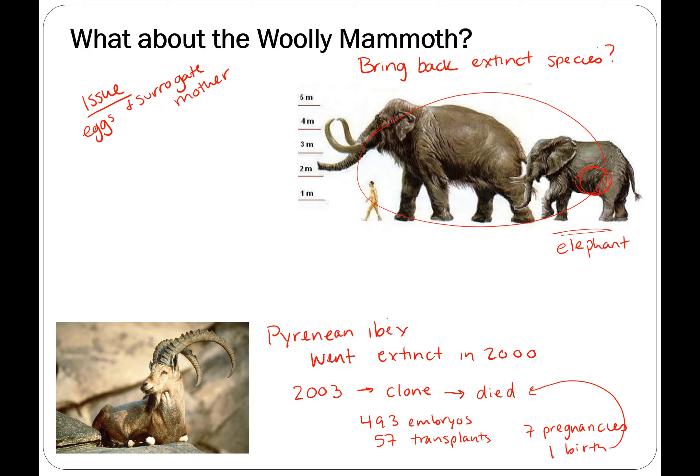Animal cloning is not very efficient, but there are options, and people are thinking about using this as a way to bring back extinct species, or to make herds of animals. We heard about hornless cows — perhaps they could take the DNA from one of those hornless cows and do somatic cell nuclear transfer. But you can imagine the cost. It's probably cheaper to remove the horns.